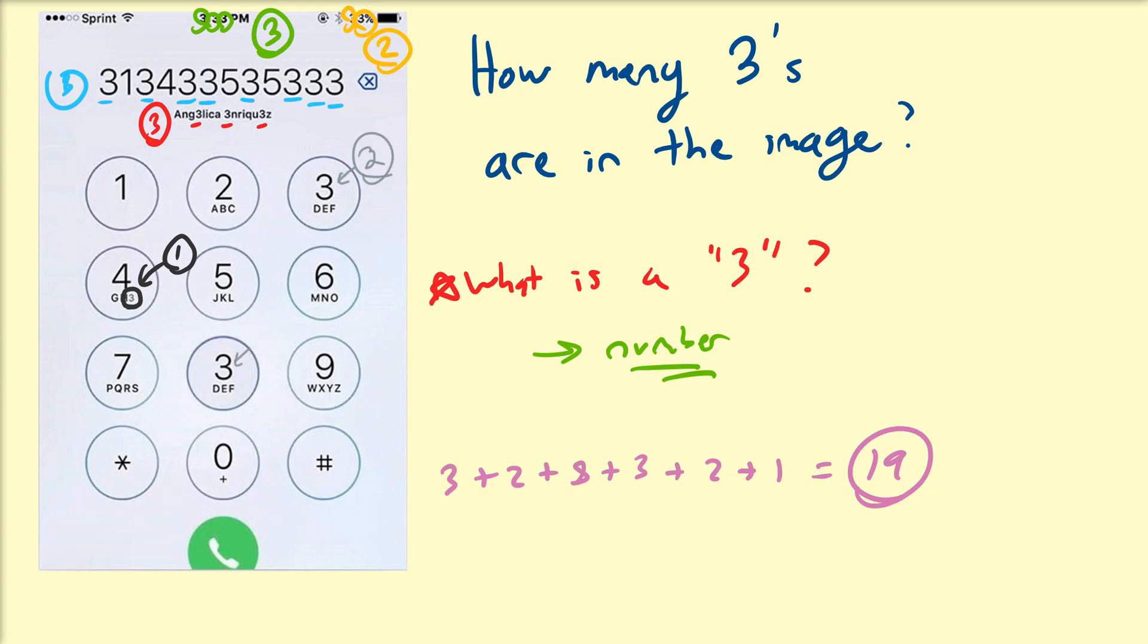Now there is an extension of this problem which addresses this particular question: what is a 3? If you count three dots and three bars at the top, you may want to include that as an additional two. So if you say numbers plus objects, then you can say that the correct answer is 21.